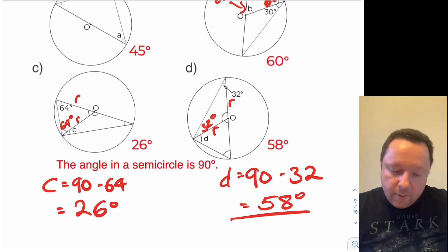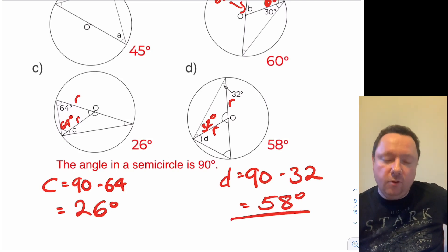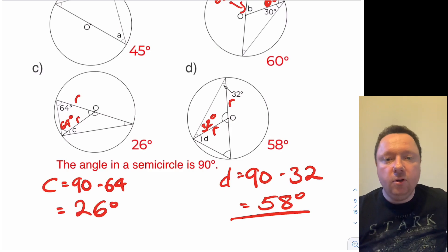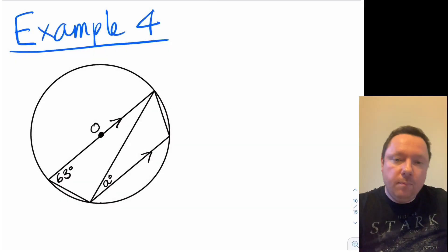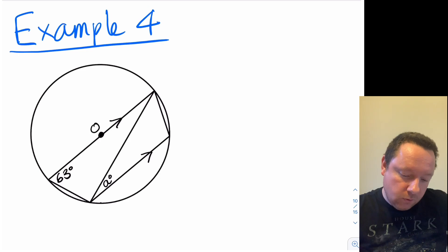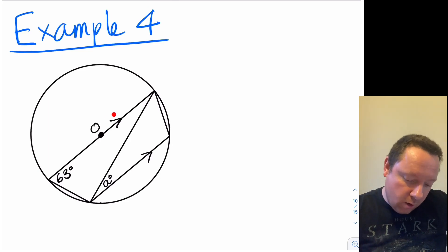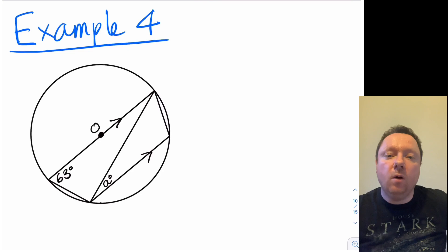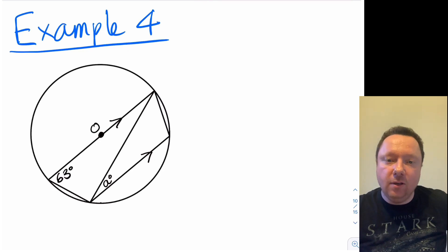Hope you managed that. If not, have a look through my solutions again and try to follow through and give it a go again. Example four is a little bit more complicated — notice I've put these little arrows on these lines, which means they're parallel, and from previous work we know how to find angles inside parallel lines.